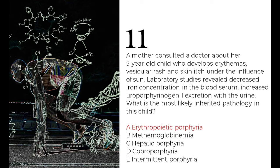The 11th question: a mother consulted a doctor about her five-year-old child who develops erythema, vesicular rash, and skin itch under the influence of sun. Laboratory studies revealed decreased iron concentration in blood serum and increased uroporphyrinogen 1 excretion in urine. The key things to notice are the vesicular rash and skin itch under sun exposure, and the accumulated substrate being excreted — uroporphyrinogen 1.